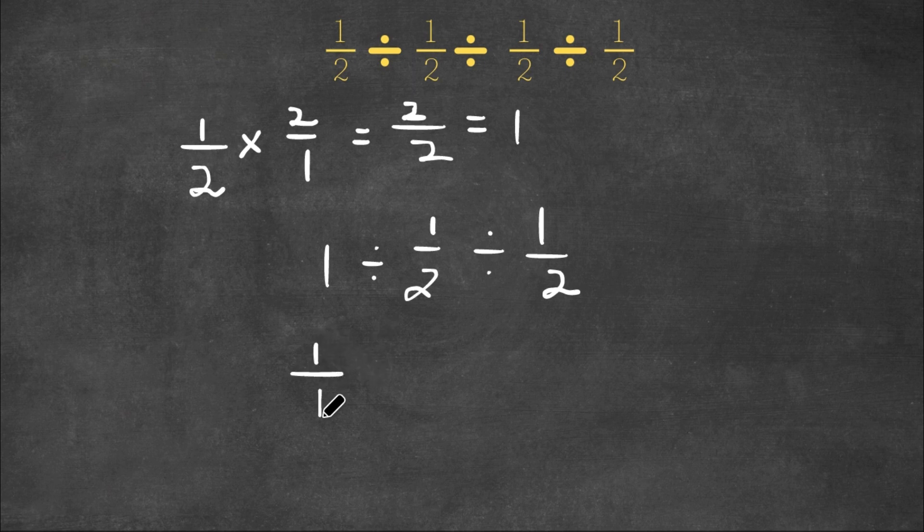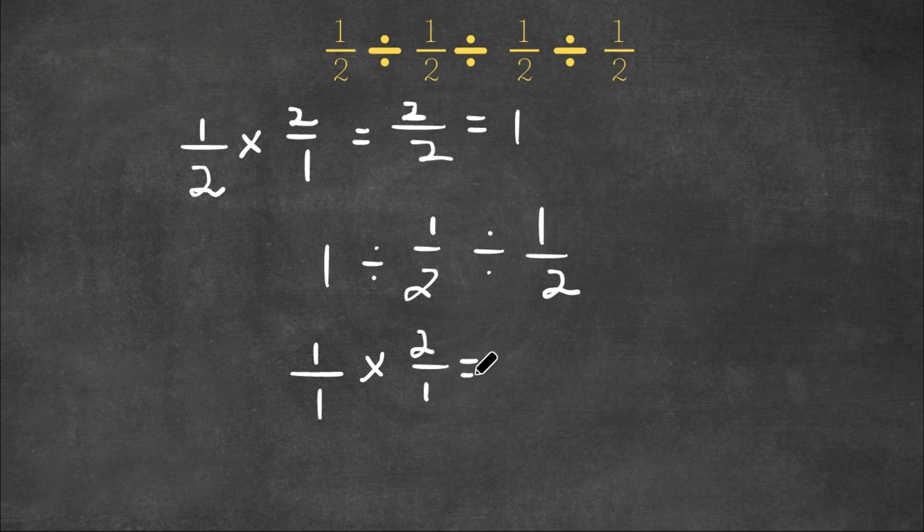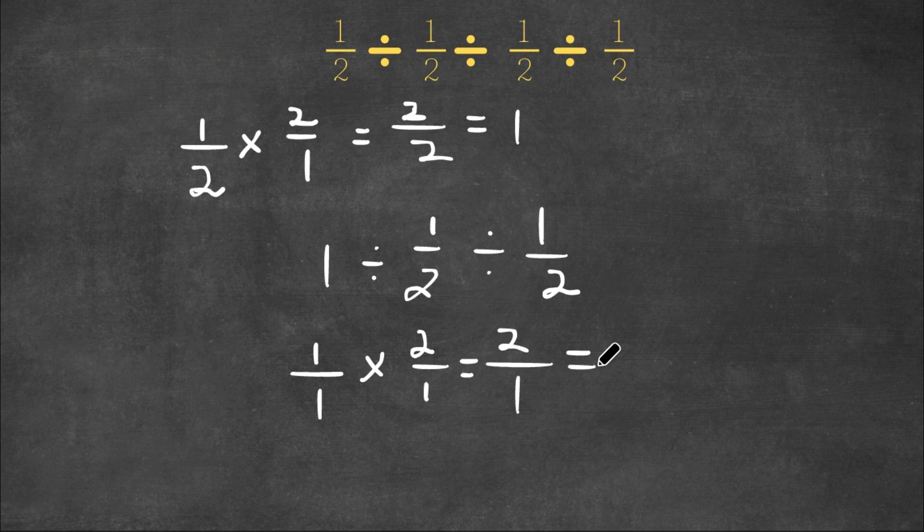Now 1 is the same thing as 1 over 1, and remember, we keep this the same, we flip the sign, and we find the reciprocal. The reciprocal of 1 half is 2 over 1. And now this is equal to 1 times 2 is 2, and 1 times 1 is 1. So we have 2 over 1, which is equal to 2.